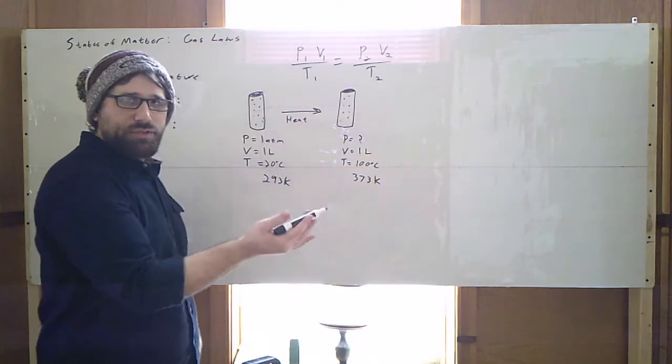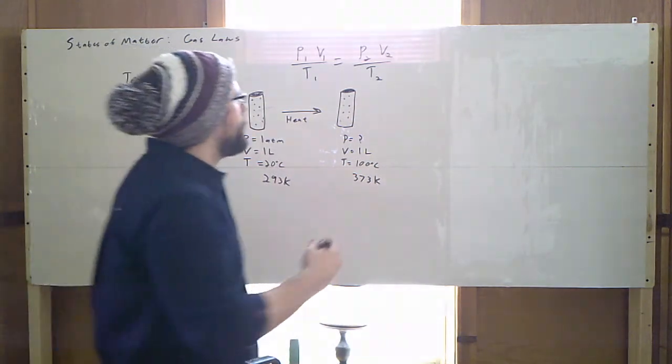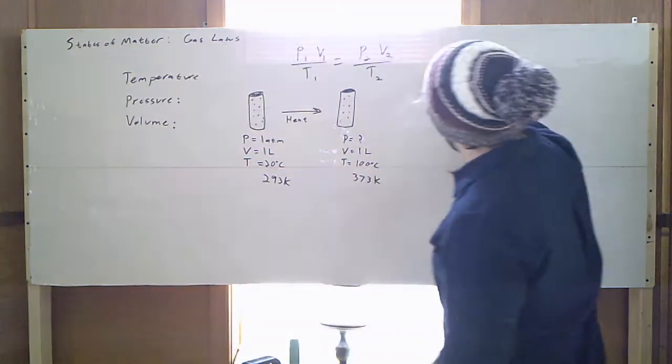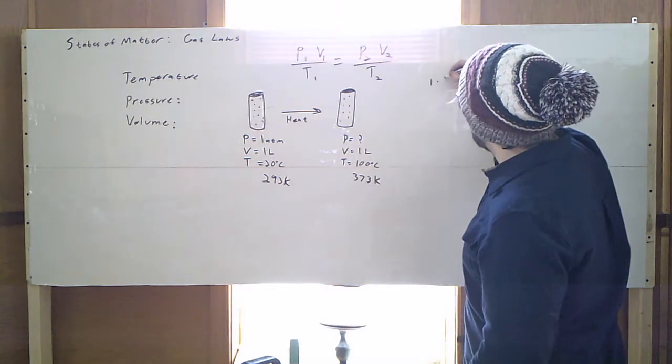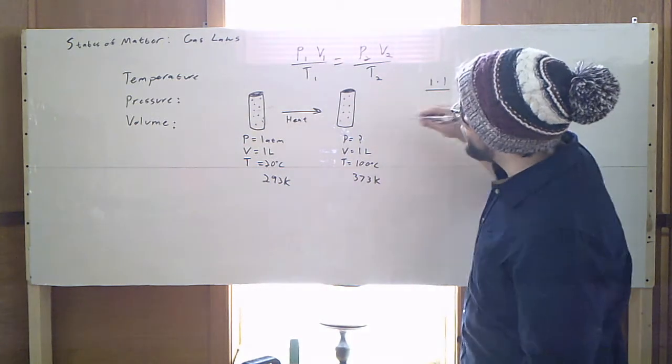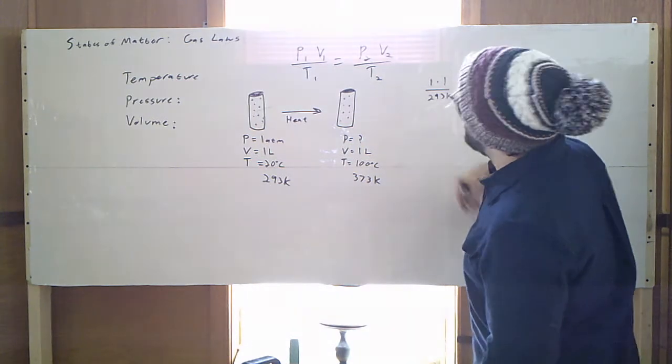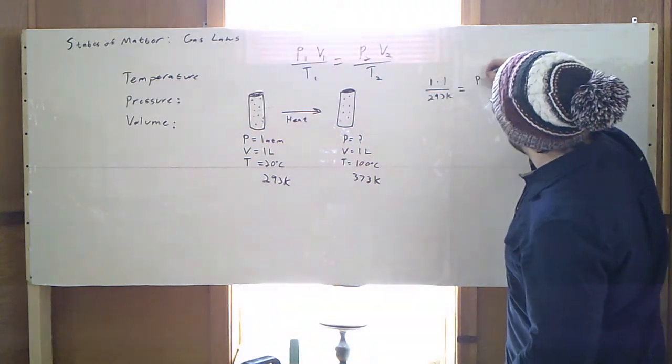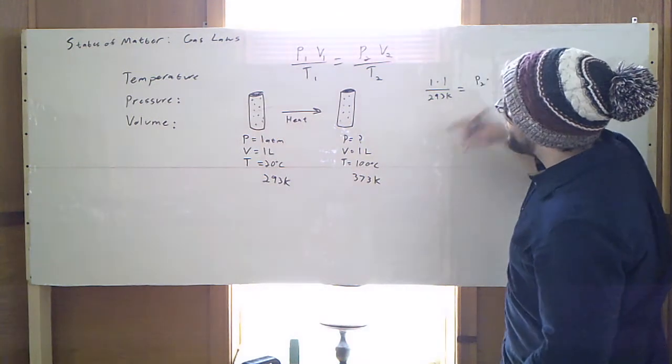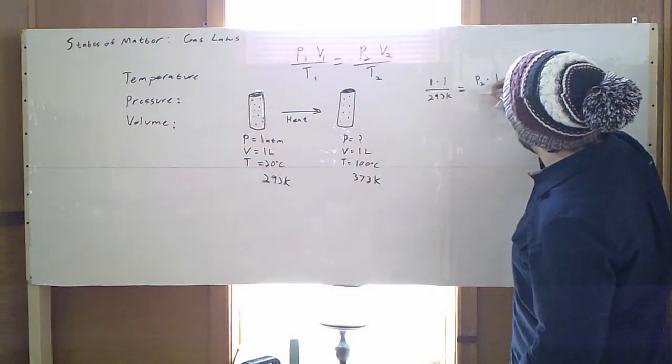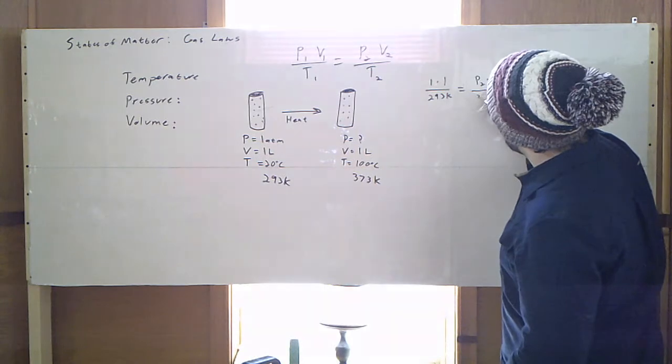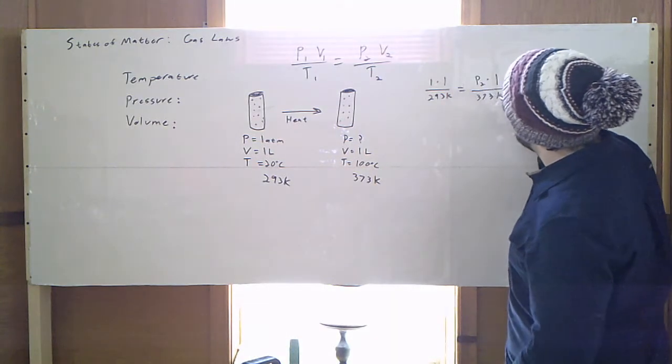And then we just plug our numbers into our equation, do some minor algebra, and solve. So my first pressure is one. My first volume is one, divided by my initial temperature of 293 Kelvins. That's going to equal pressure P2, is what I'm looking for, times the one liter of volume, divided by 373 Kelvins.